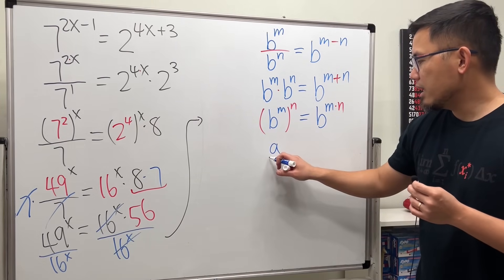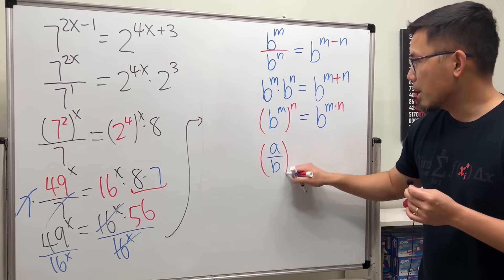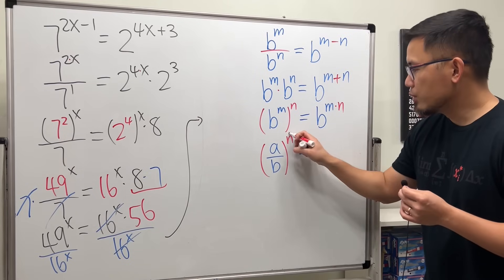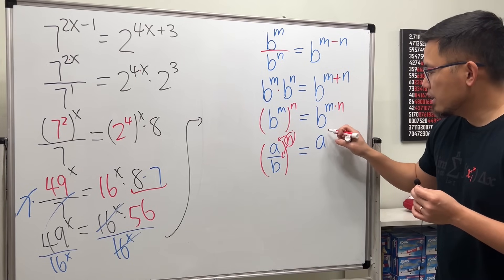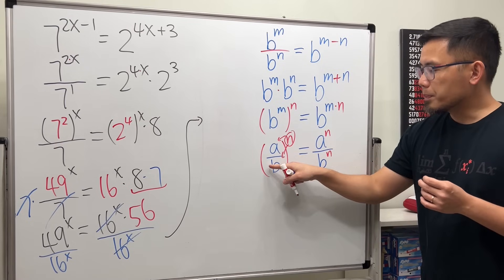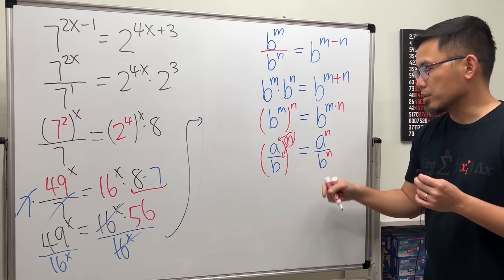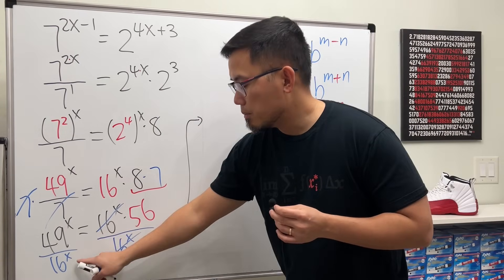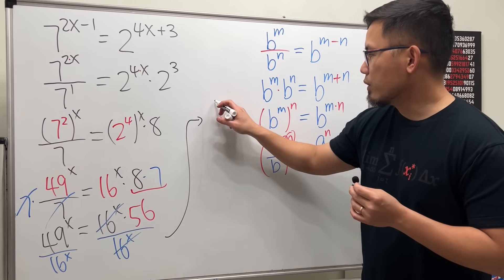If today we have, let's say, a over b, a fraction, and then raised to some power n, in fact, what this right here, we get to distribute the power. This is legitimate, right? a to the n over b to the n. When you have a multiplication with the division inside, and then to the n's power, you get to distribute the powers. So that's exactly what we do. But again, do it backwards.